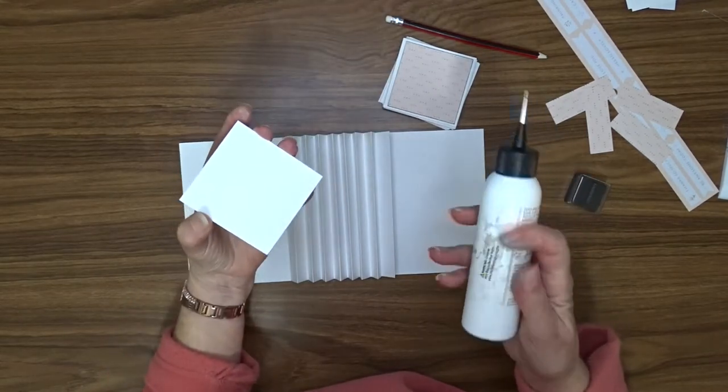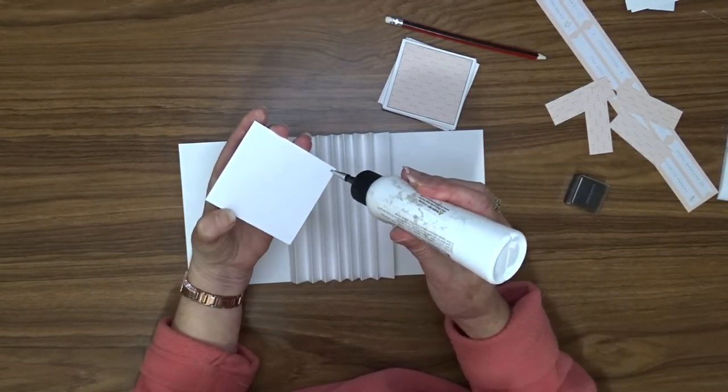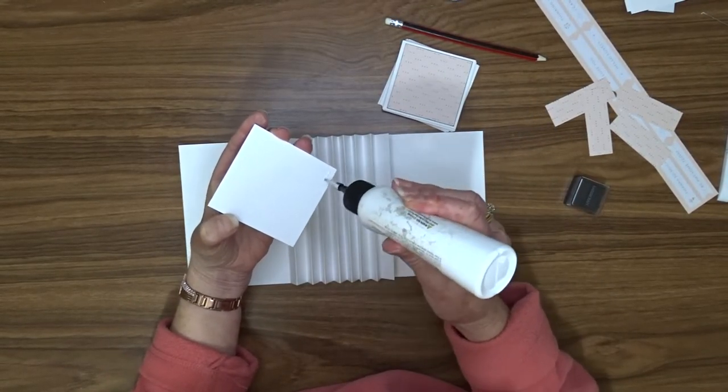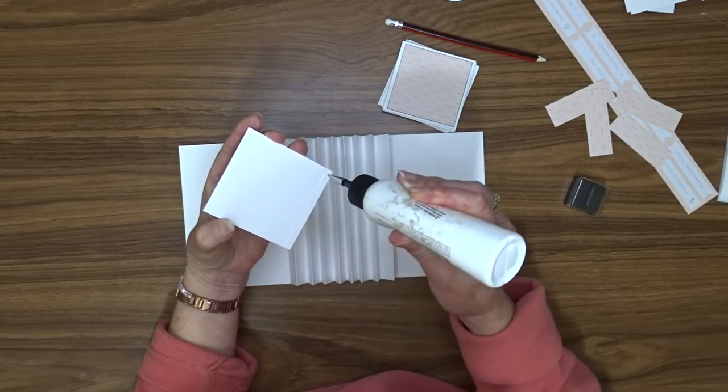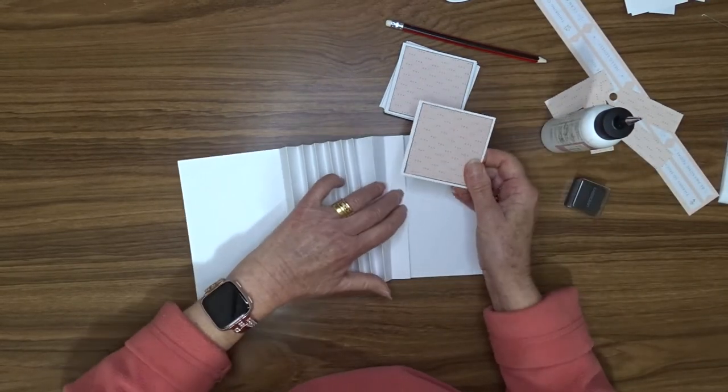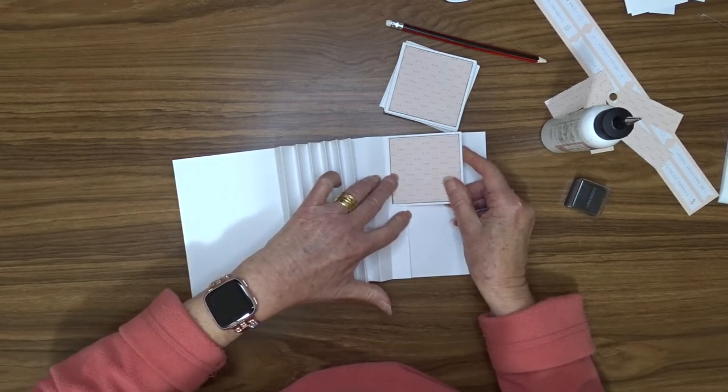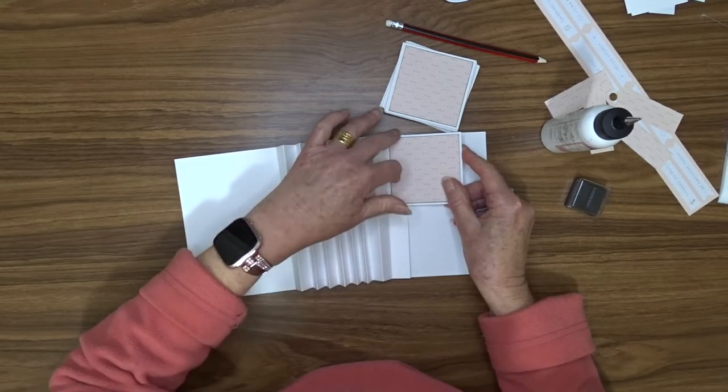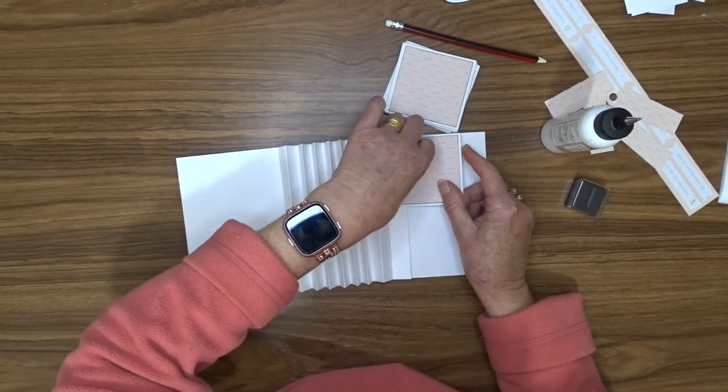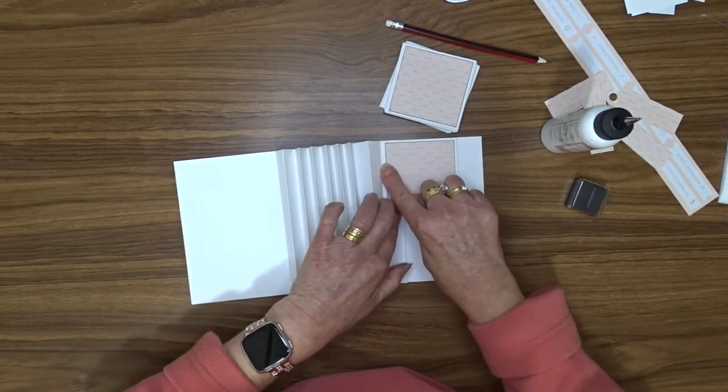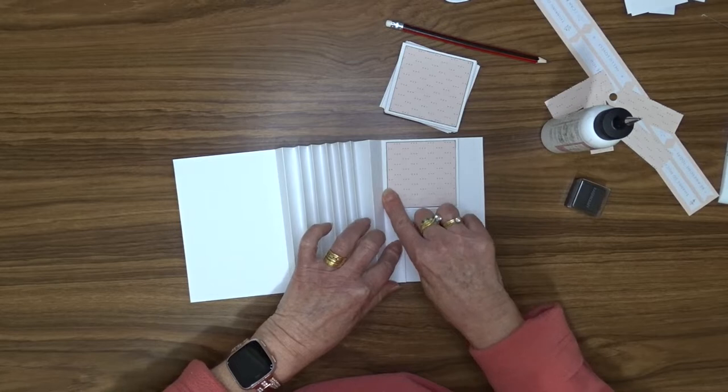Time now to start attaching our squares to our card base. I'm going to start on the right hand edge so I'm going to be putting the first one on the inside of the first mountain fold. So I'm going to leave the first up piece and the piece that goes down towards the valley is where I'm going to attach my first piece of square cardstock.